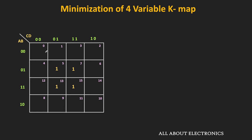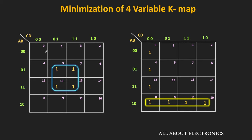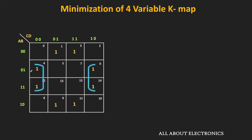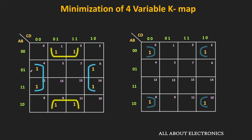Now let us see some possible ways to make a group of 4 ones. If 4 ones are adjacent to each other, or if they are in the same row or same column, they can be grouped together. Since cells in the first and last columns are adjacent, we can make a group of 4 ones from those. Likewise, the 2 ones in the first and last rows are also adjacent, so we can combine them into a group of 4. Also, the ones at each corner of the map are adjacent, so we can combine them into a group of 4.